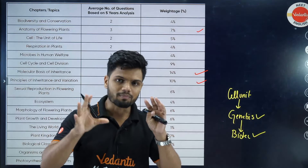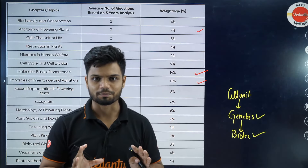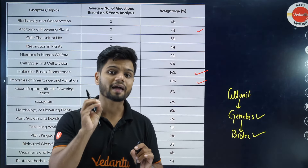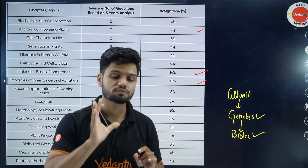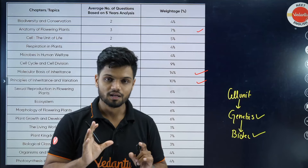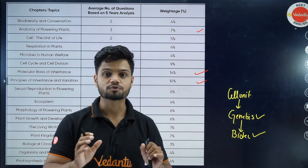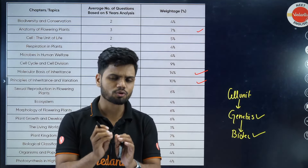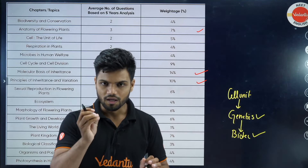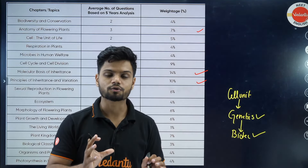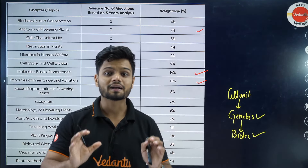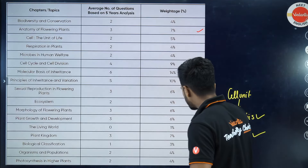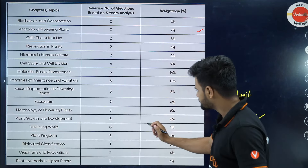If you already have some idea about the Cell chapter, I believe you should start with the extremely high weightage and most difficult chapters in botany, which is the Plant Physiology unit. I would advise you to learn the entire Plant Physiology unit, and if you don't know where to go, RNA Batch is the answer.